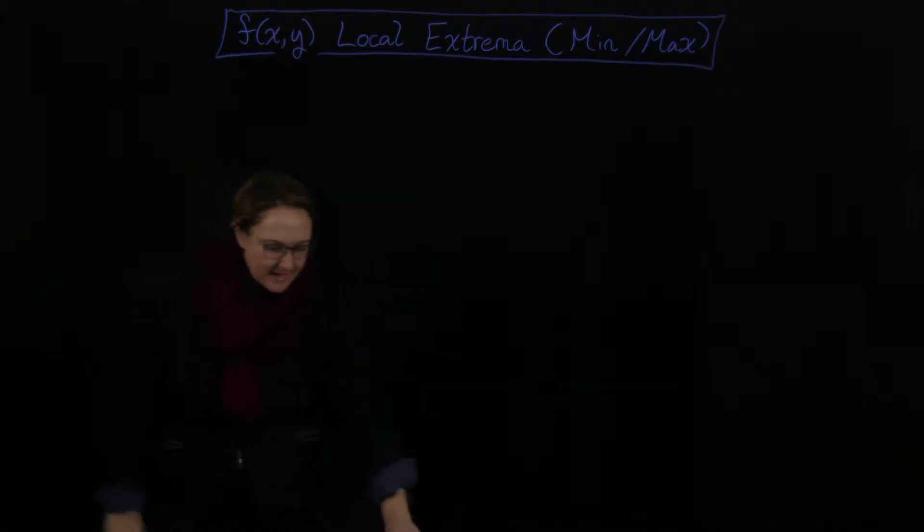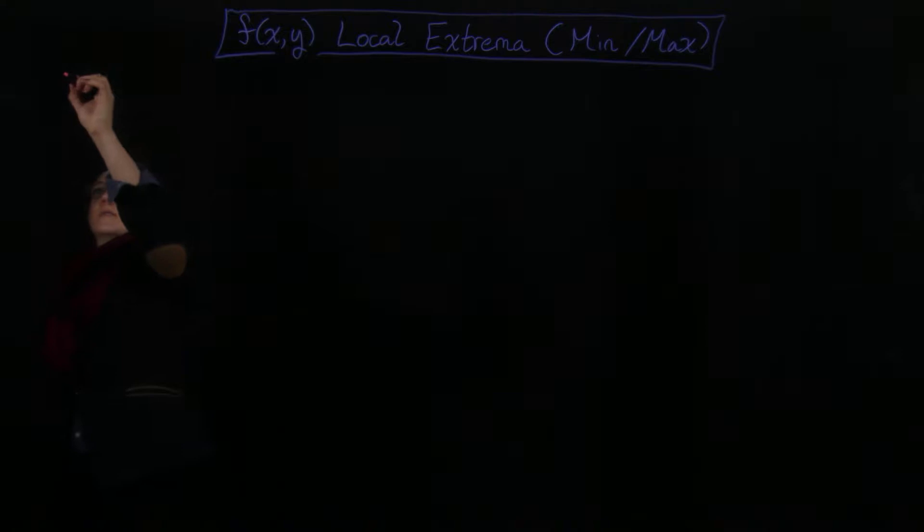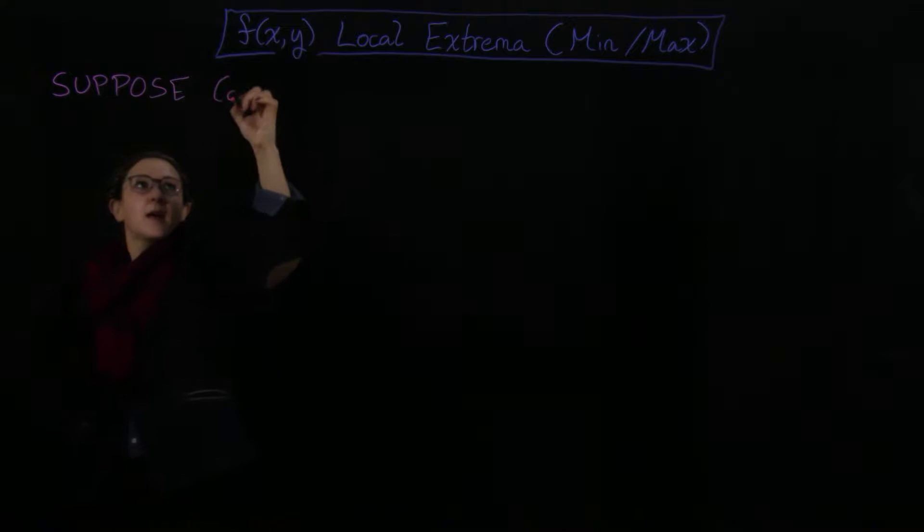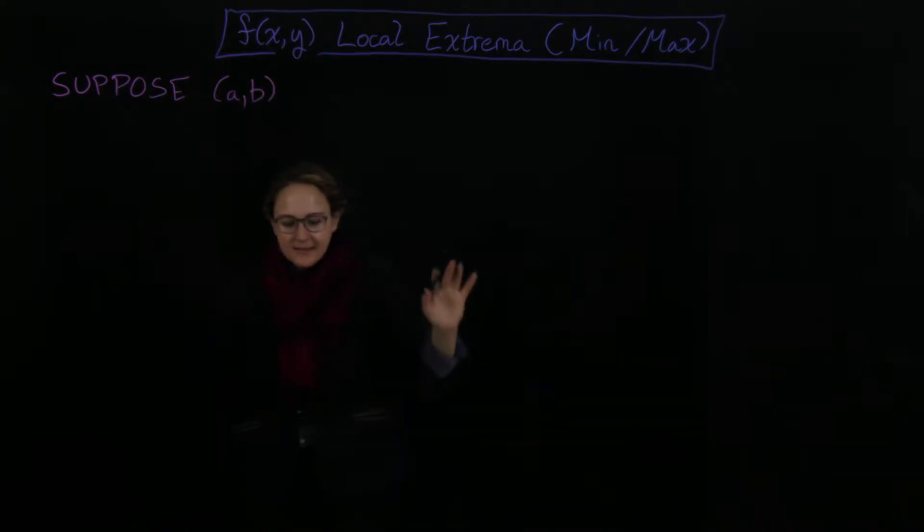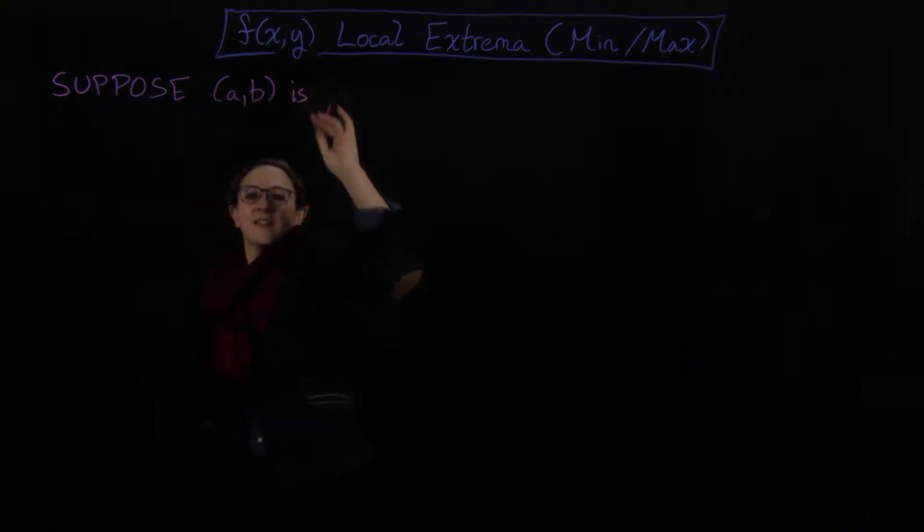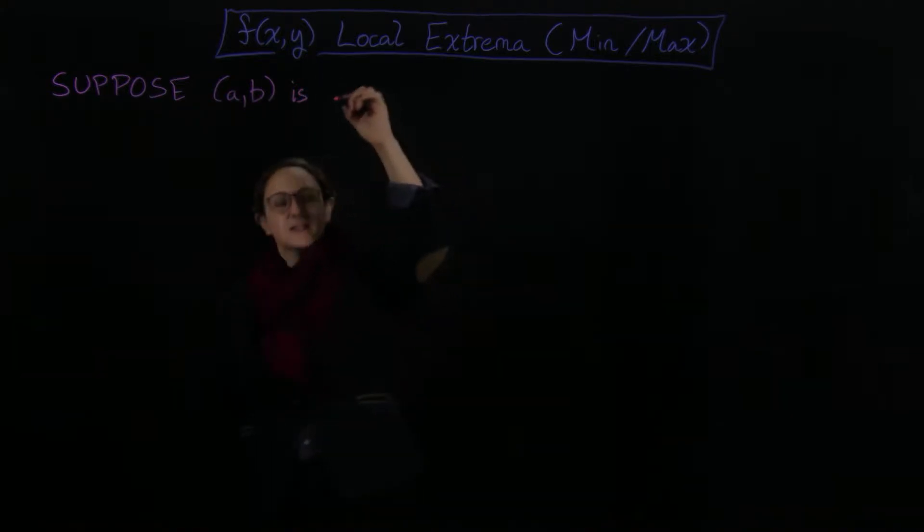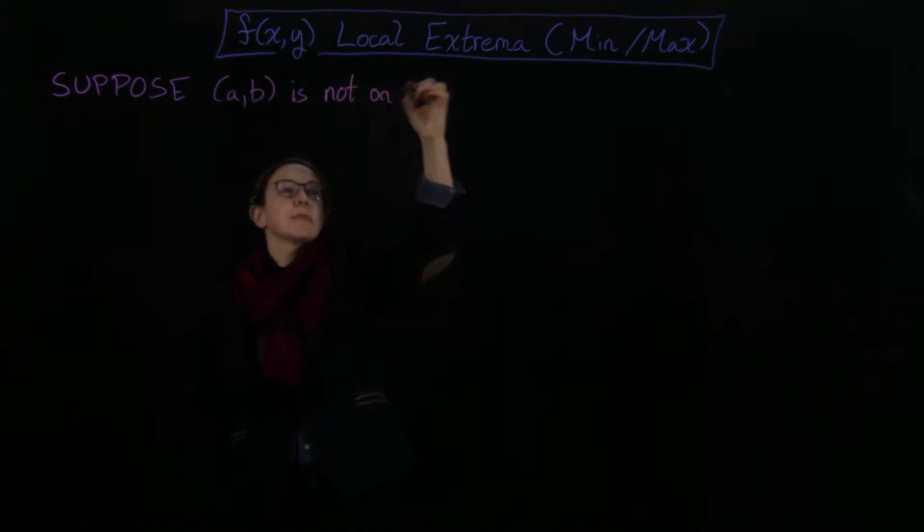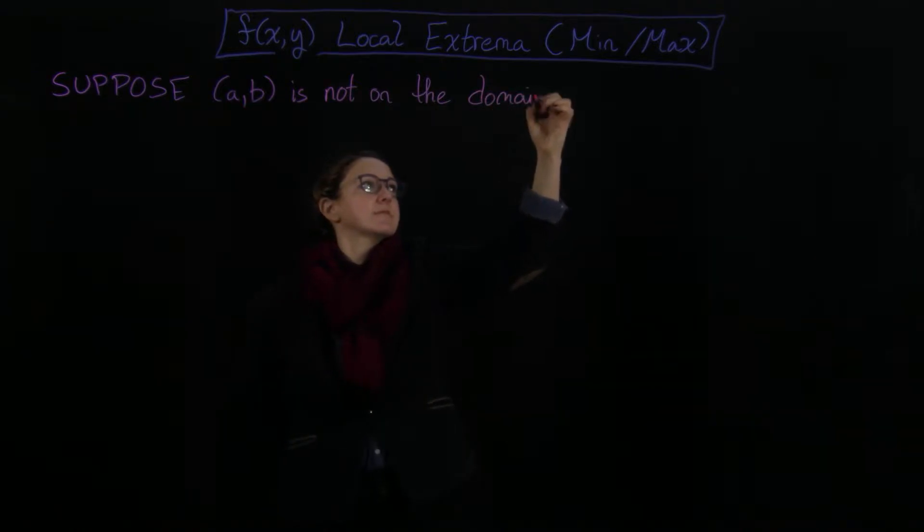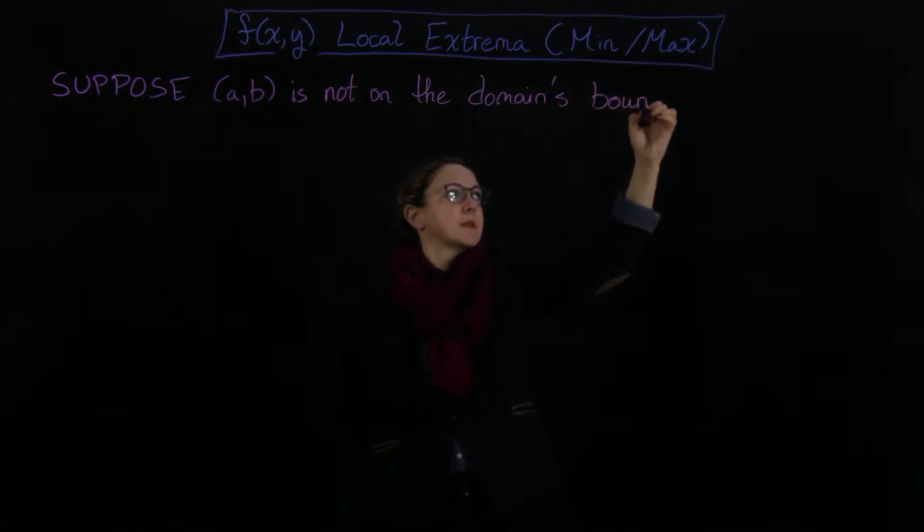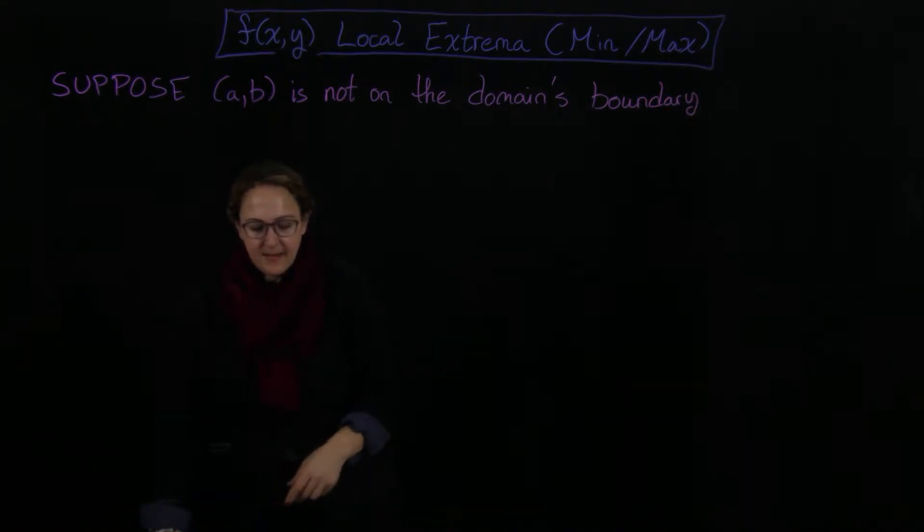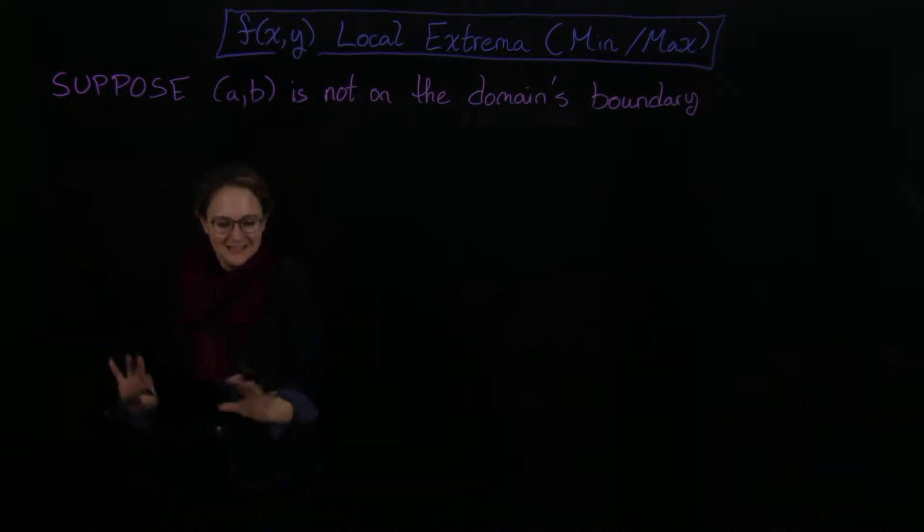So suppose that we have that (a,b) is not on the domain's boundary. It's kind of inside, not on the domain's boundary. That's going to be the starting position for both of these, so then we're going to say we have a local max at (a,b).